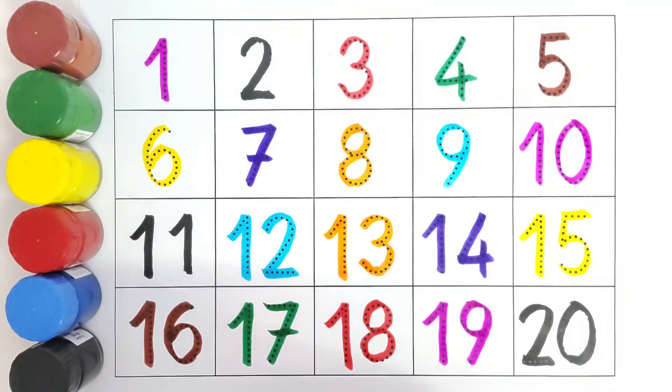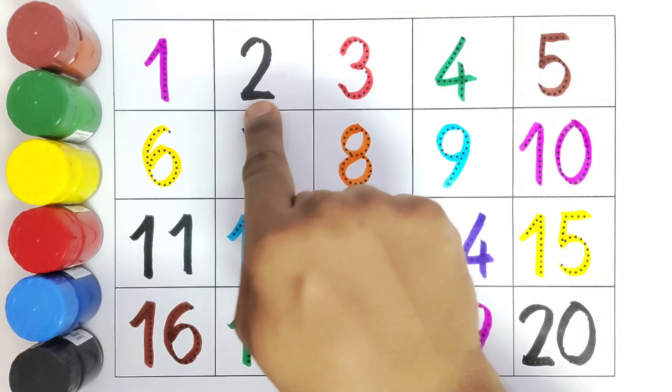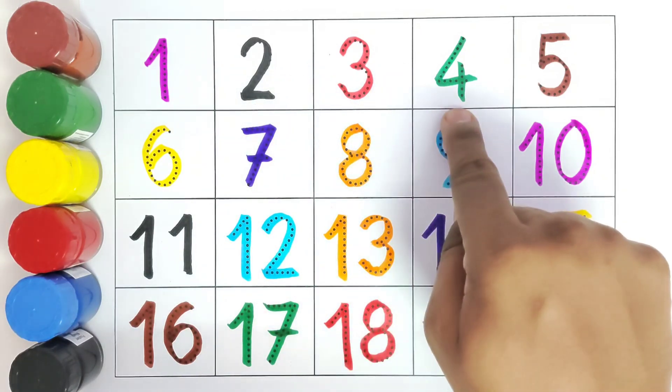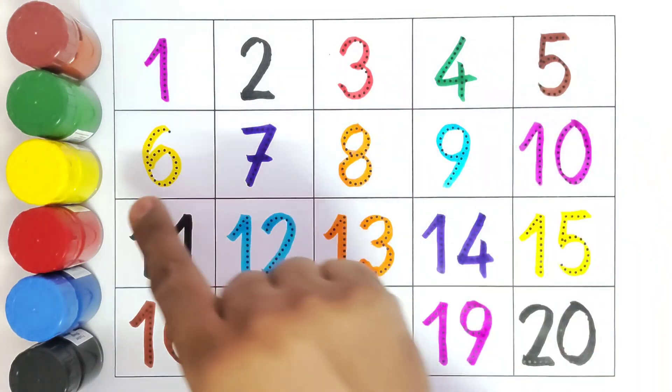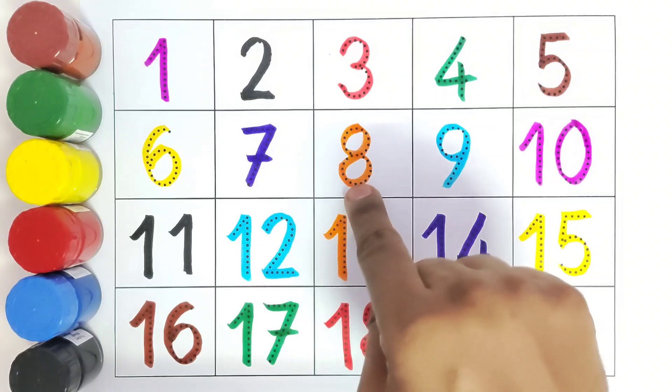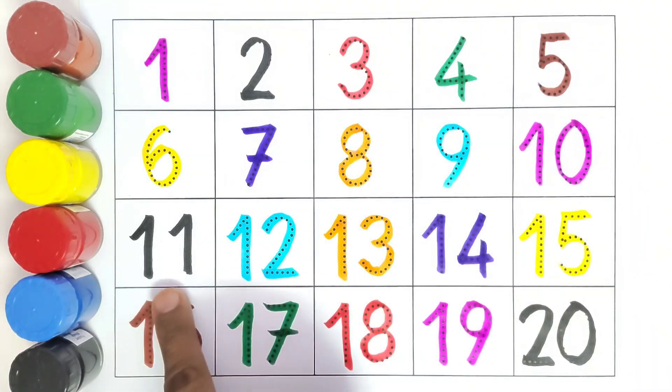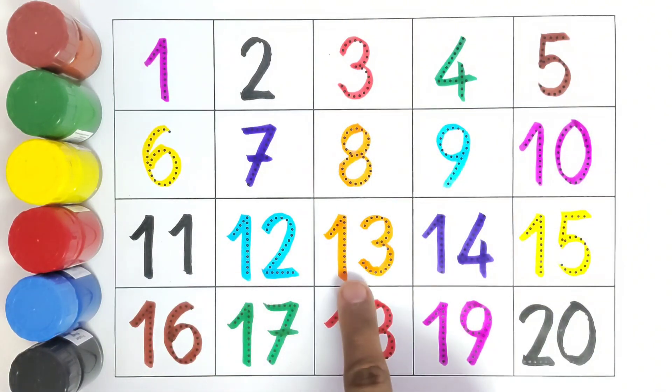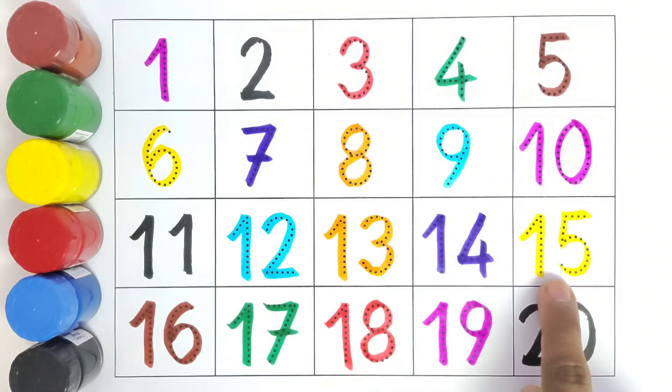Now we will read one by one. One, Two, Three, Four, Five, Six, Seven, Eight, Nine, Ten, Eleven, Twelve, Thirteen, Fourteen, Fifteen, Sixteen, Seventeen, Eighteen, Nineteen, Twenty.